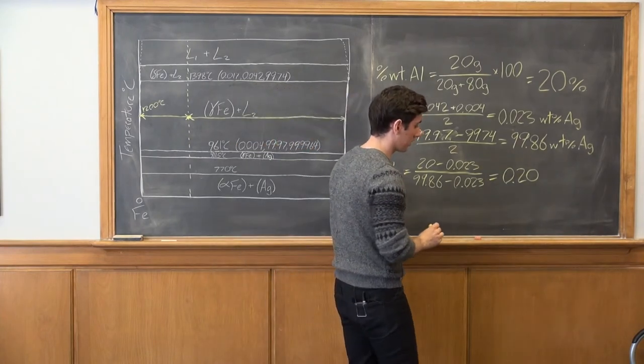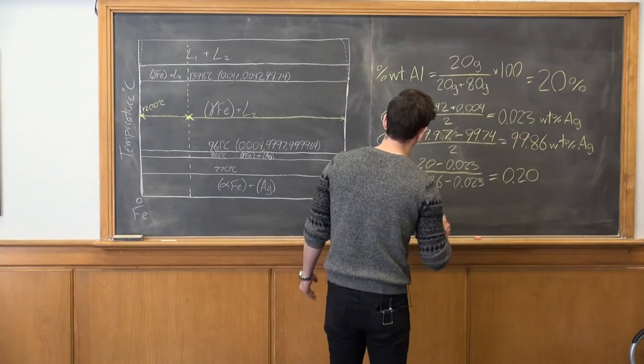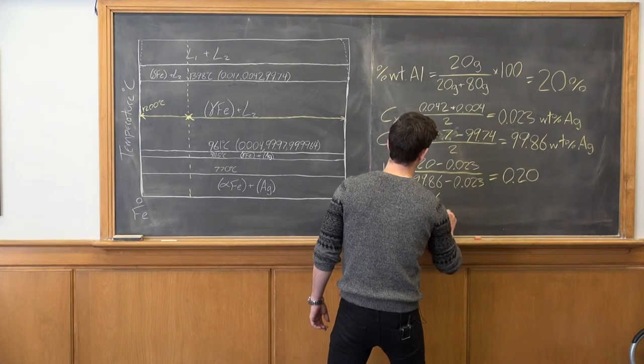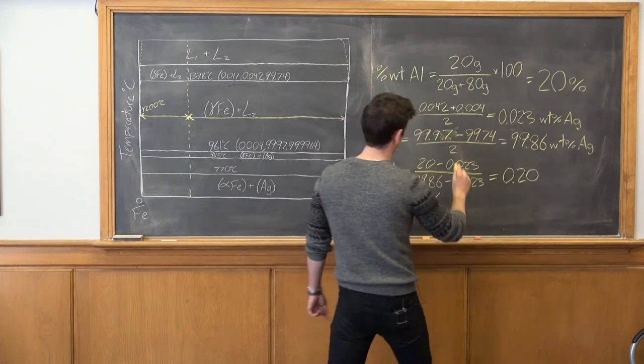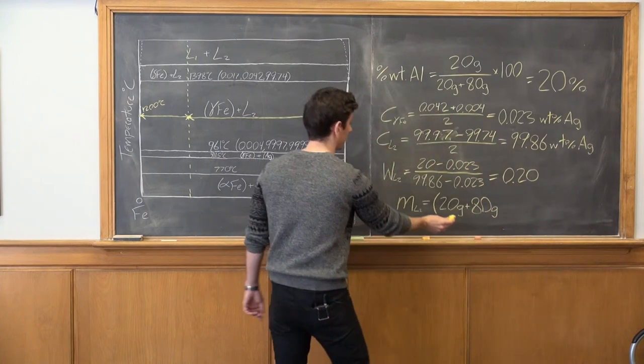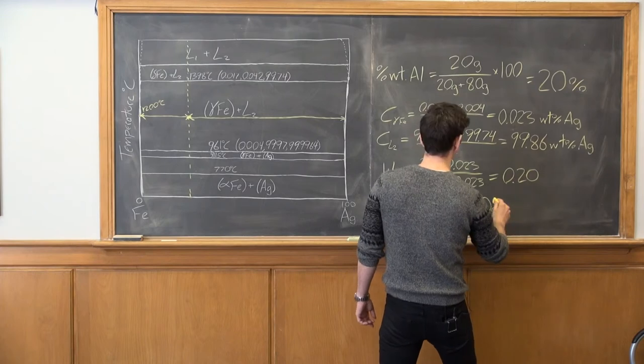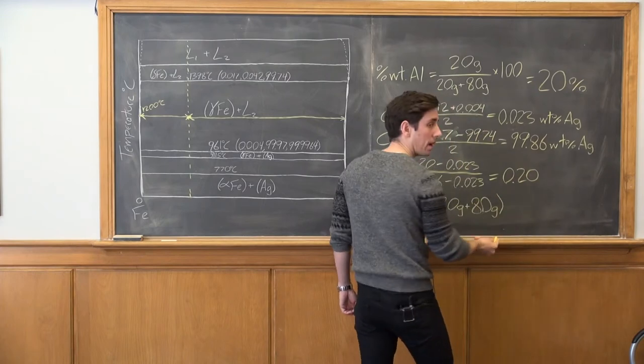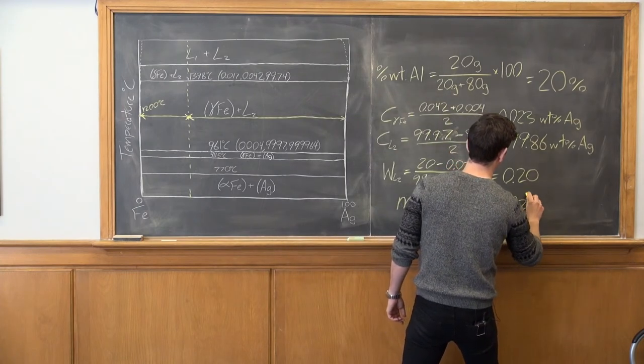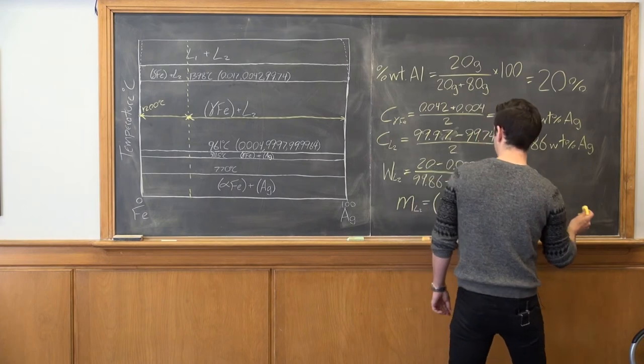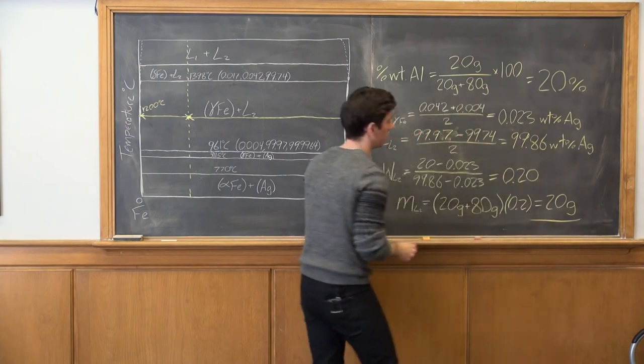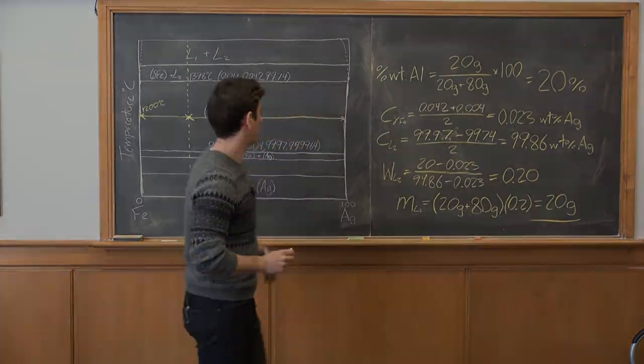Now the question asked for the mass, so we know that the mass of the liquid is just going to be the total mass, which was 20 grams plus 80 grams, the silver plus the iron, multiplied by our weight fraction of the liquid, which was 0.2, and this is equal to 20 grams. So we have 20 grams of liquid present at 1200 degrees.